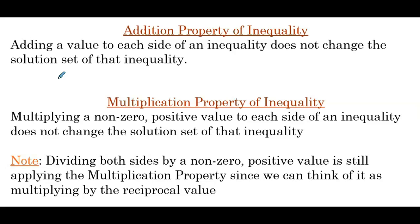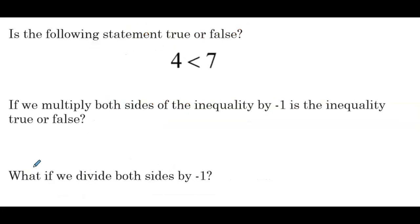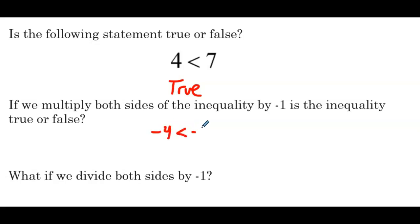There's an important subtlety for the multiplication property of inequality: the value has to be positive. So what happens when it's negative? To answer that, let's look at a statement: is 4 less than 7? This is definitely true. If we multiply both sides by negative 1, we'd have negative 4 is less than negative 7.